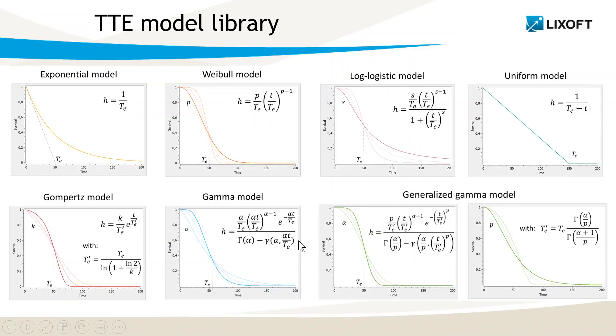To help the user find a good Hazard function, common parametric models that describe the various shapes that the Survival function can take are already implemented in a TTE models library. Their Hazard functions and associated Survival curves are displayed here. Each model has a scale parameter, called here TE, that characterizes the Survival timescale. Most models also have one or several additional parameters that characterize the shape of the Survival curve.